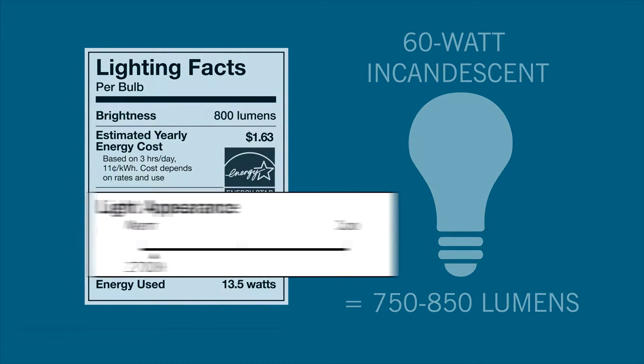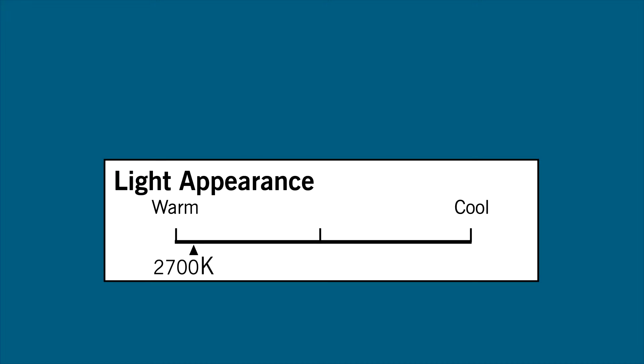See that 2700 K? The K stands for Kelvin. That's how color temperature is measured. The lower the Kelvin number, the more yellow the light. The higher the Kelvin, the bluer the light.